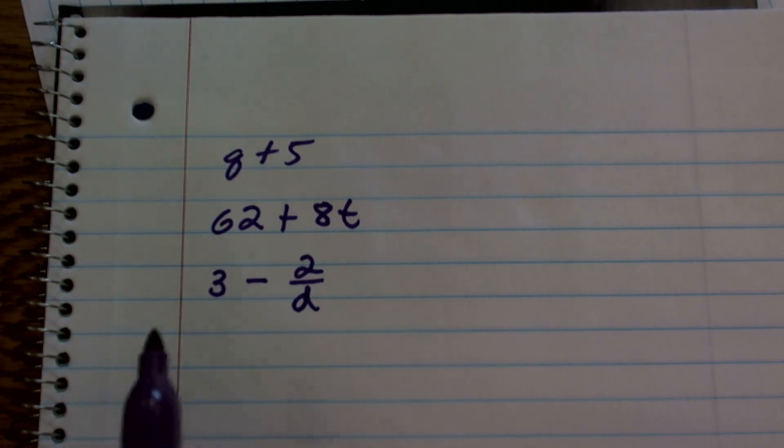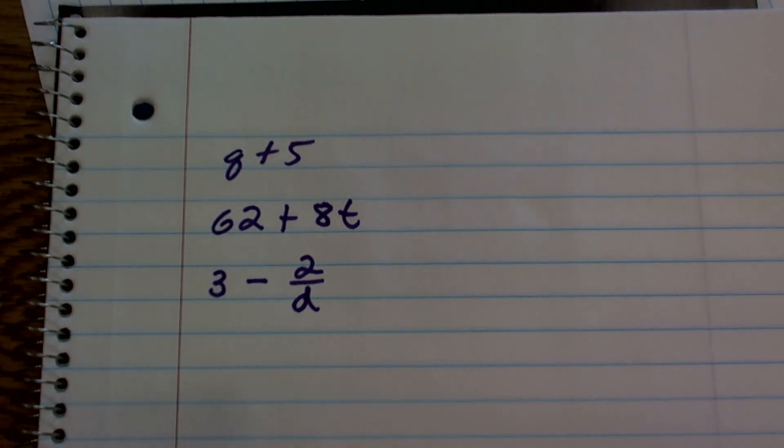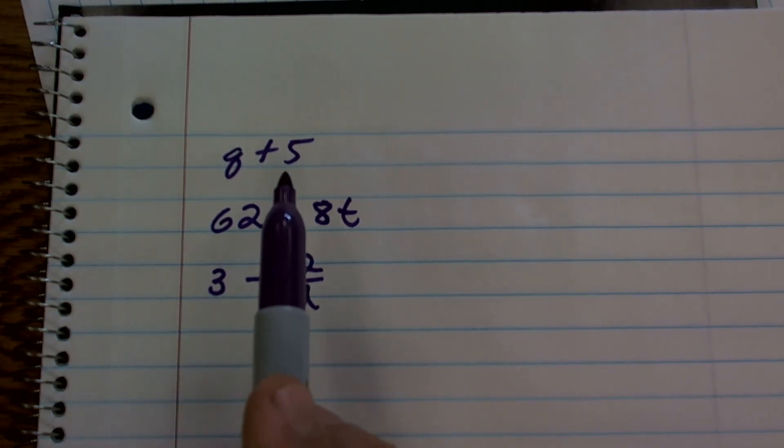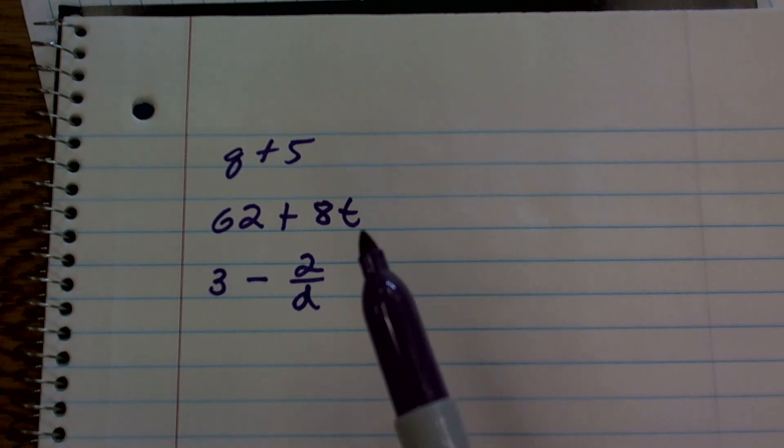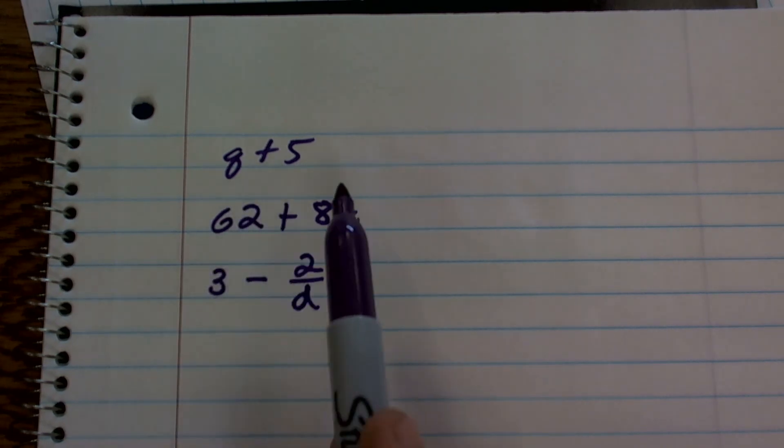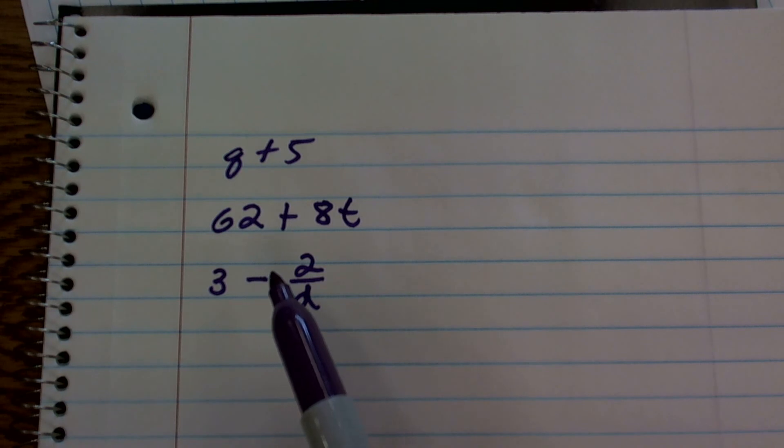So this could be Q plus 5. I could write 'the sum of Q and 5,' '5 more than Q,' or 'Q increased by 5.' There's maybe a couple other ways we can look at addition, but that's pretty much all you're doing—using different ways to say that.